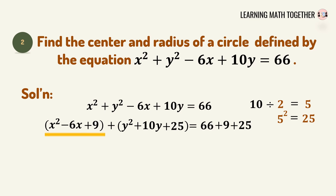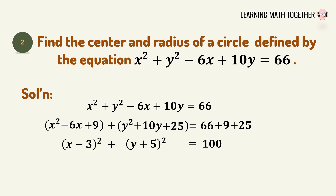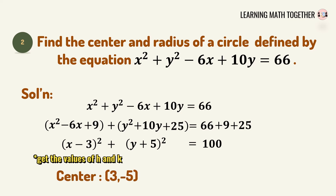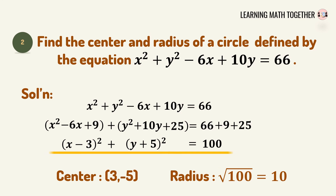Rewrite x squared minus 6x plus 9 as (x minus 3) squared, and for the y variable we have (y plus 5) squared. Add all the constant numbers: 66 plus 9 plus 25 equals 100. So the standard form is (x minus 3) squared plus (y plus 5) squared equals 100. The center: from x minus 3, h equals positive 3; from y plus 5, k equals negative 5 — don't forget to alter the sign. The radius is the square root of 100, which equals 10.